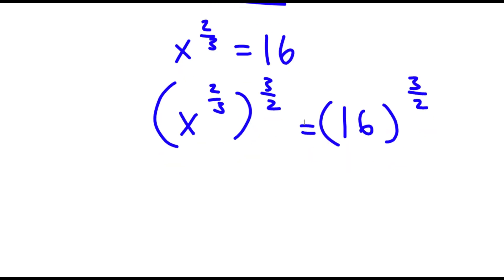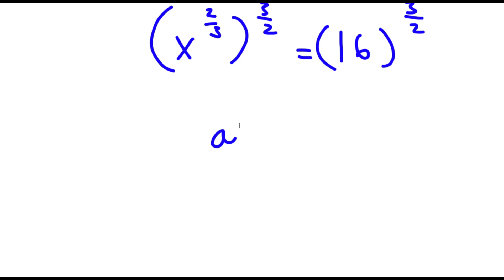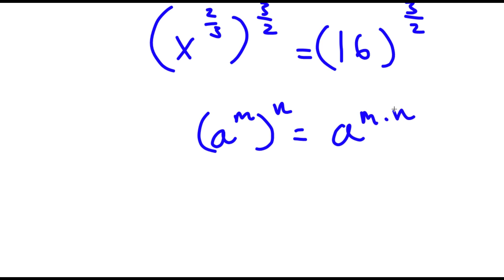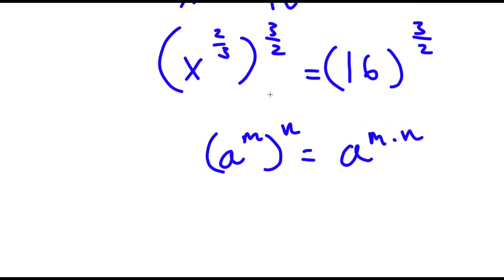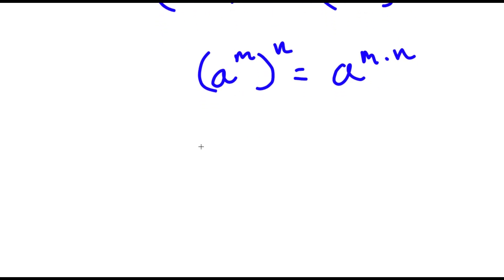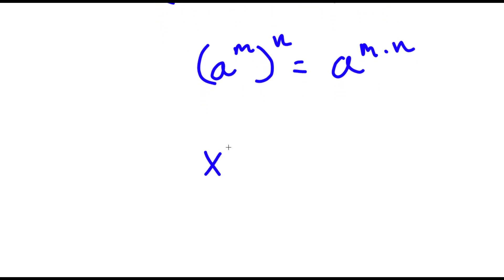Now if I have something in the form a to the power of m, to the power of n, this is the same thing as a to the power of m times n. So in this case, x to the power of 2 thirds, to the power of 3 over 2, that's going to be the same thing as x to the power of 2 thirds times 3 over 2.